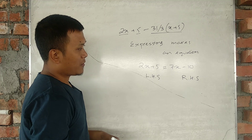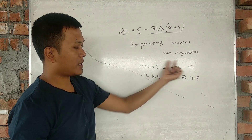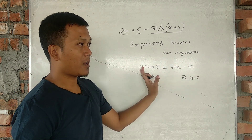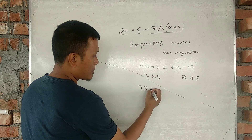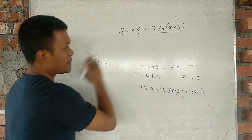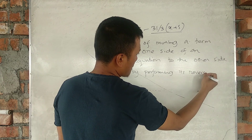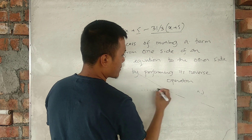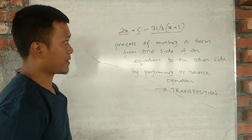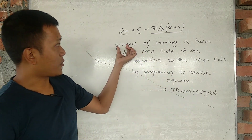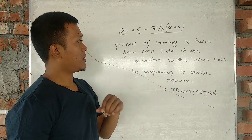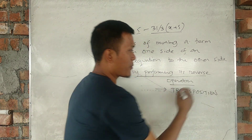The first step is transposition. Transposition is the transfer of a term from one side to the other. By performing its reverse operation, this is the definition of transposition: it is the process of moving a term by performing its reverse operation.